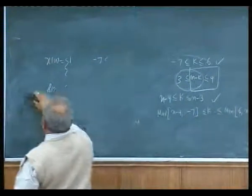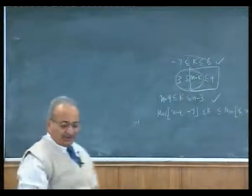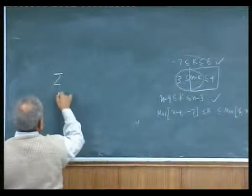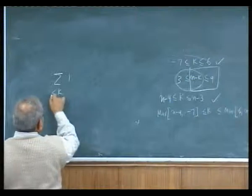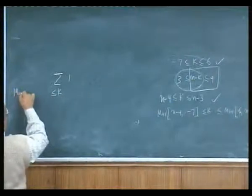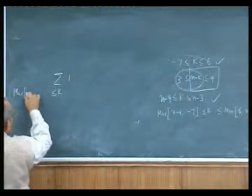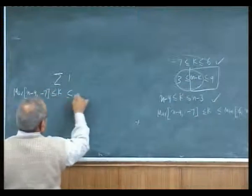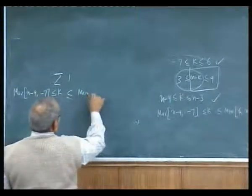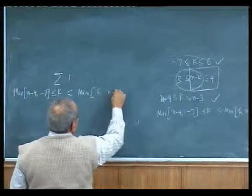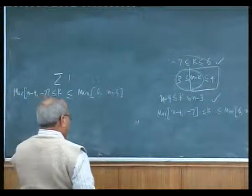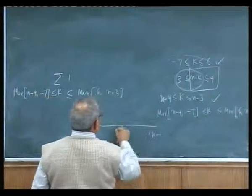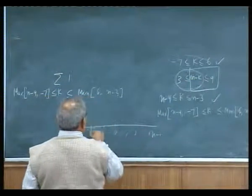So the limit on k becomes the summation limit. k has to be greater than the maximum of n minus 9 and minus 7, and less than or equal to the minimum of 6 and n minus 3. Let us take a discrete number line: 0, 1, 2, and so on.